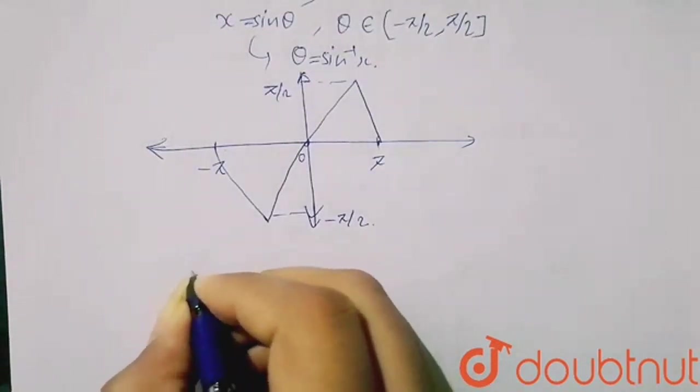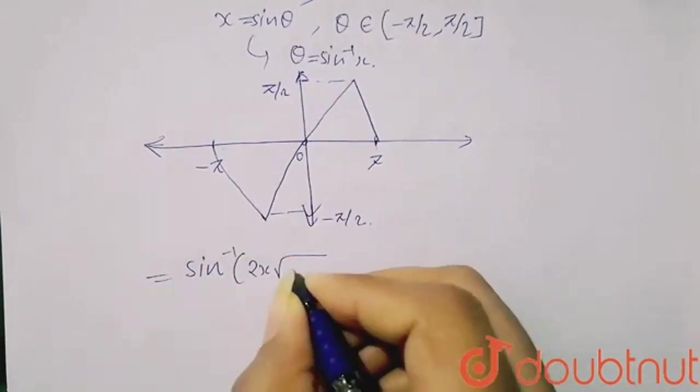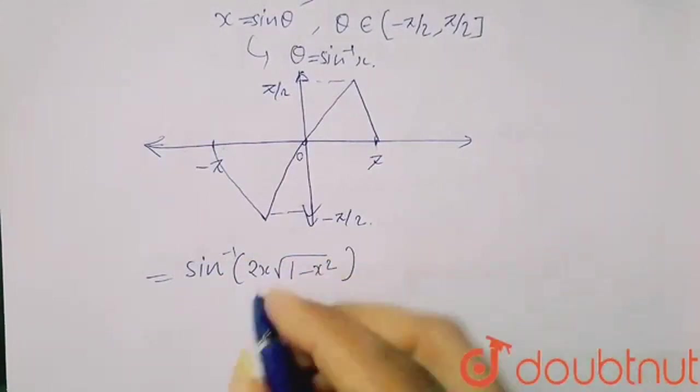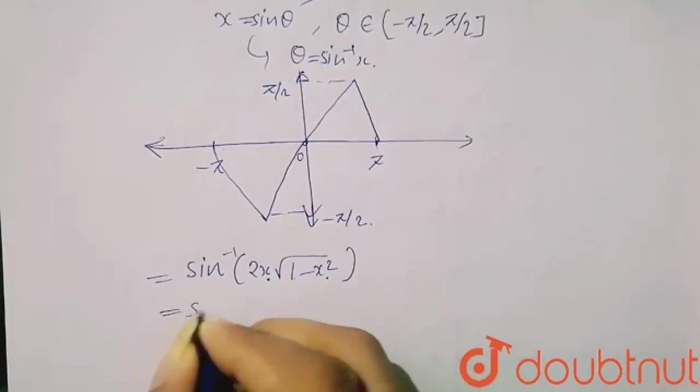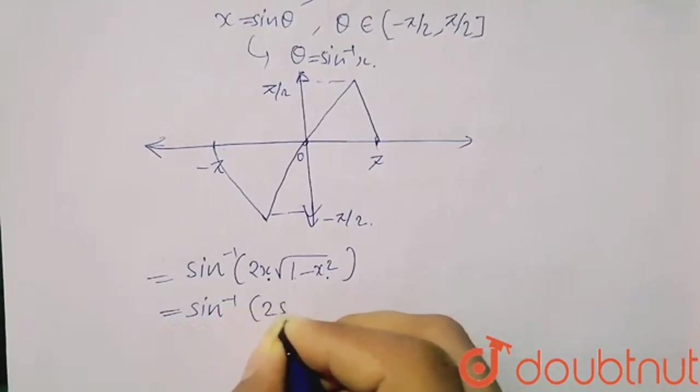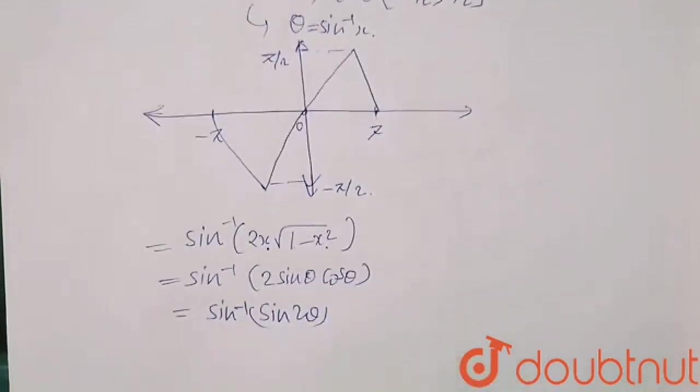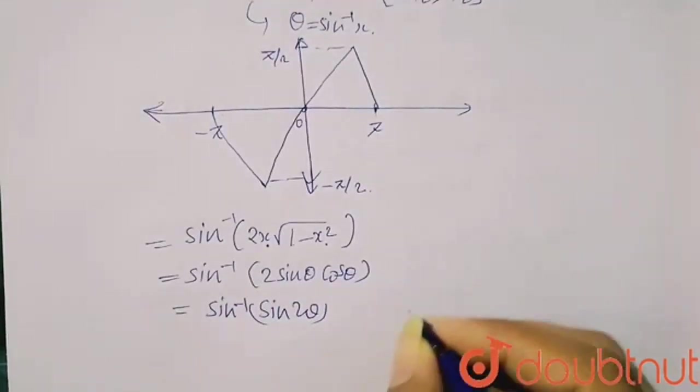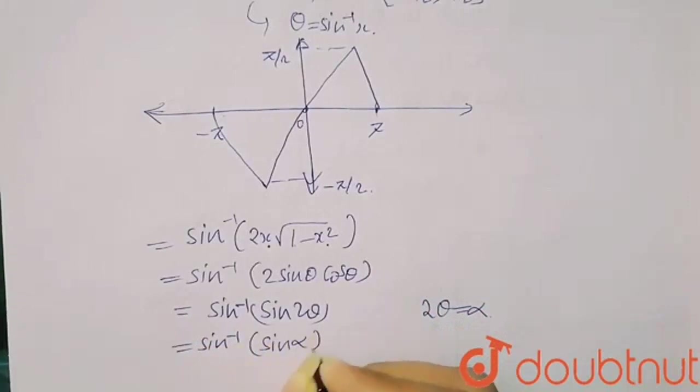Now, when you are putting it, you will get sin inverse 2x root 1 minus x square. When you put x equals sin theta, you will get 2 sin theta and here 1 minus sin square theta, so it will be cos square theta and the root and square will be cancelled. So from this you will get sin inverse 2 sin theta cos theta. You know that it equals sin inverse sin 2 theta, this is the formula. So here at the place of 2 theta, I am putting alpha. So we can write it as sin inverse sin alpha, and alpha belongs to minus pi to pi.